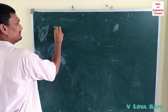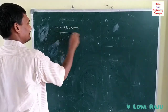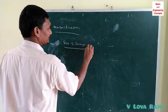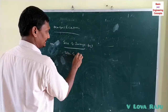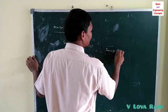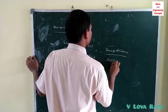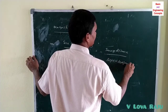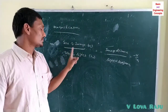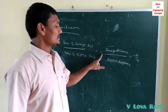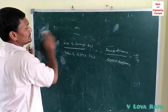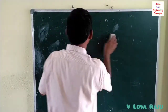Magnification is defined as the ratio of the size of the image to the size of the object, that is hi by ho, which equals negative of image distance by object distance, that is minus v by u. Concave mirrors are generally used in shaving mirrors, solar cookers, etc.